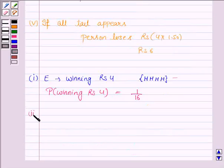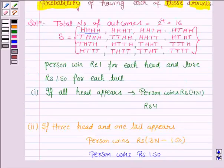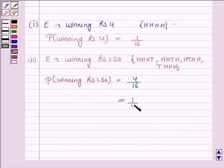In the second case, we have to find the probability of winning rupees 1.50. Here E is the event of winning rupees 1.50. The person wins rupees 1.50 if he gets 3 heads and 1 tail. There are 4 such cases — so the number of outcomes favorable to E are 4. The probability of winning 1 rupee 50 paisa is 4 upon 16, which equals 1 by 4.